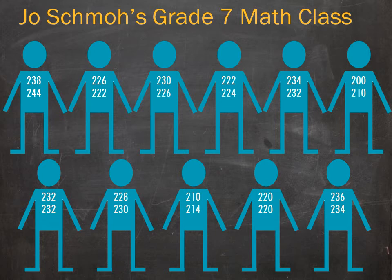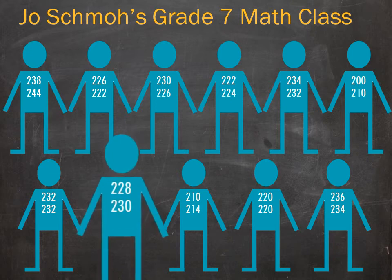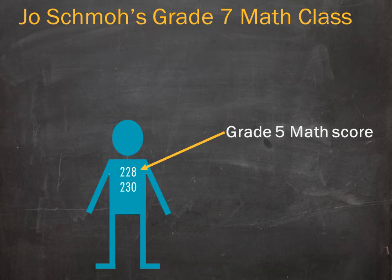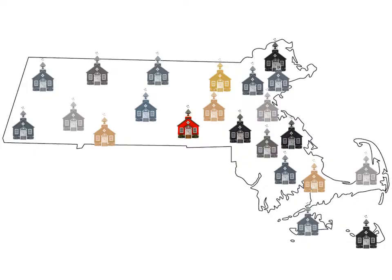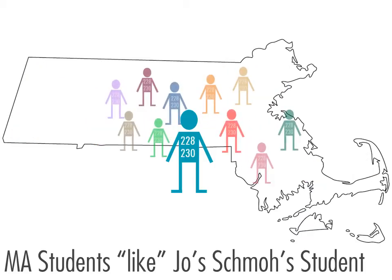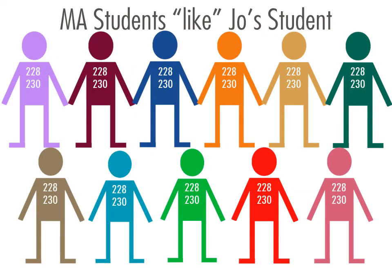These students may have been enrolled in any school in Massachusetts in those two previous grades. Let's select one student in the class. This student's grade 5 MCAS math score was 228, and the grade 6 score was 230. Now, let's look again at all the schools in Massachusetts and find the students who have the same MCAS score history as Joe Schmoe's student. These students are test score peers. Note that these are not peers based on any demographic characteristics — students whose previous test scores are the same may be very different demographically.